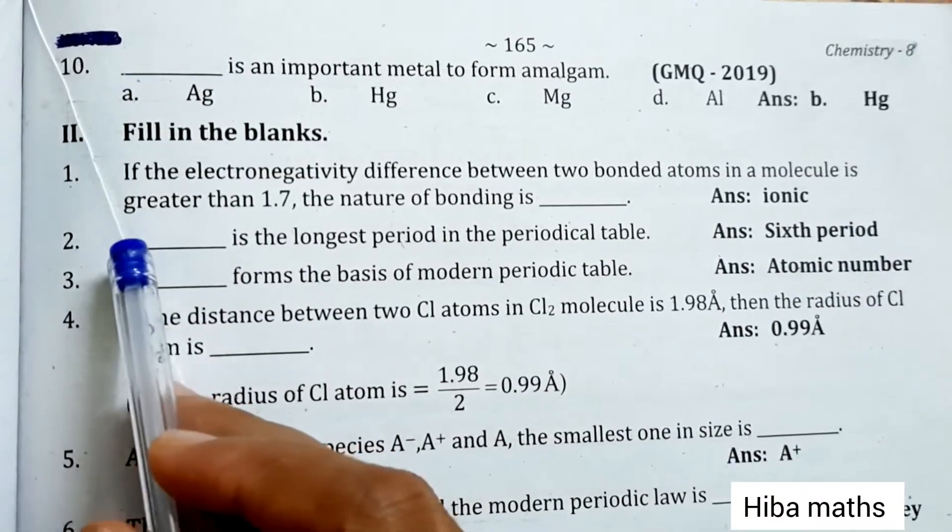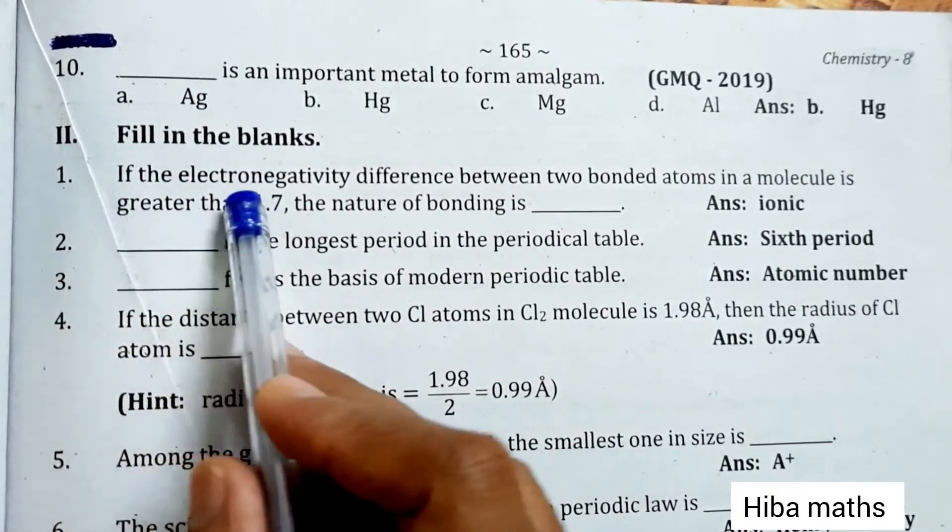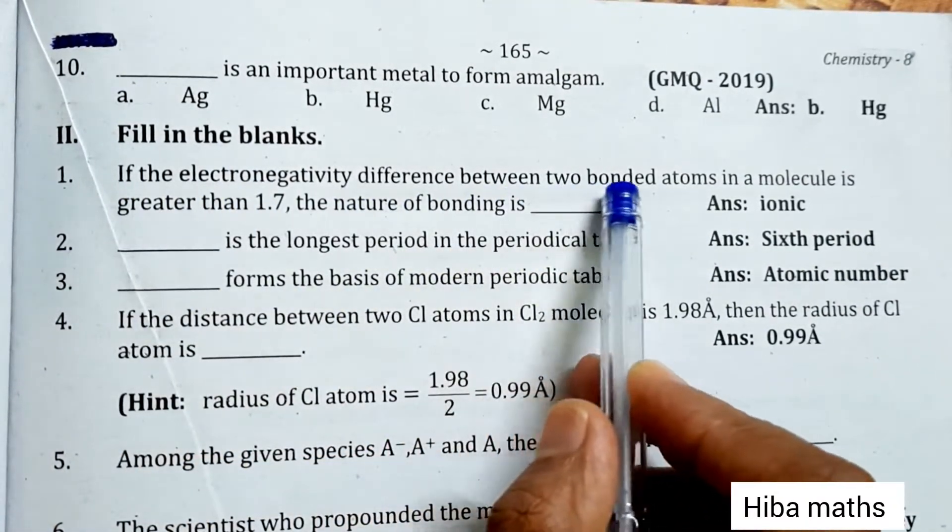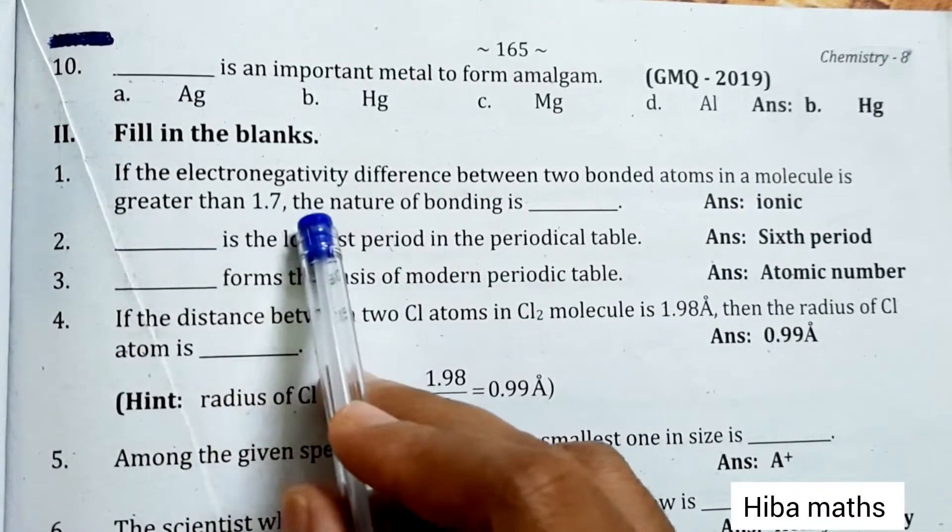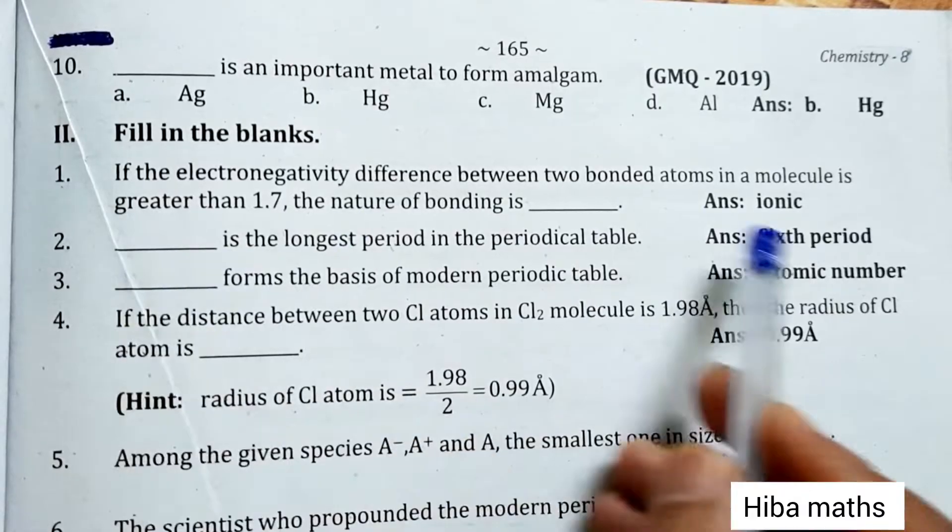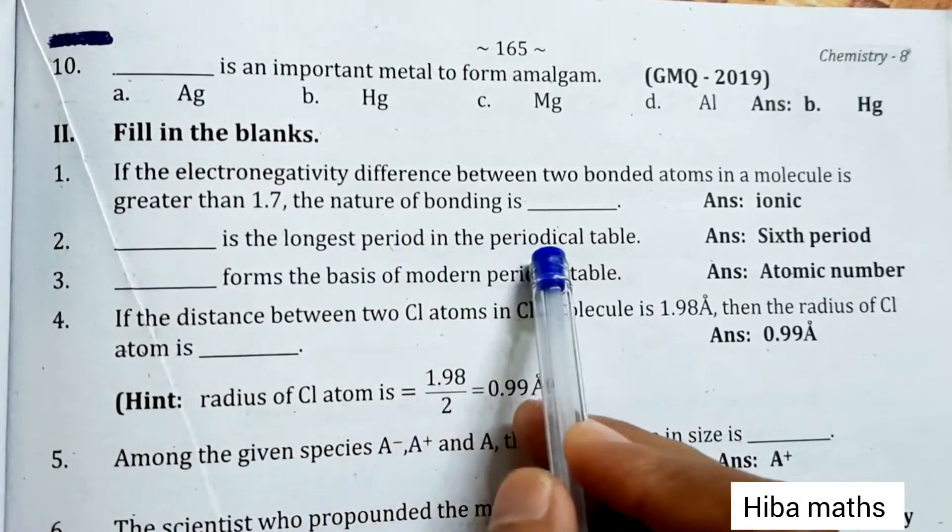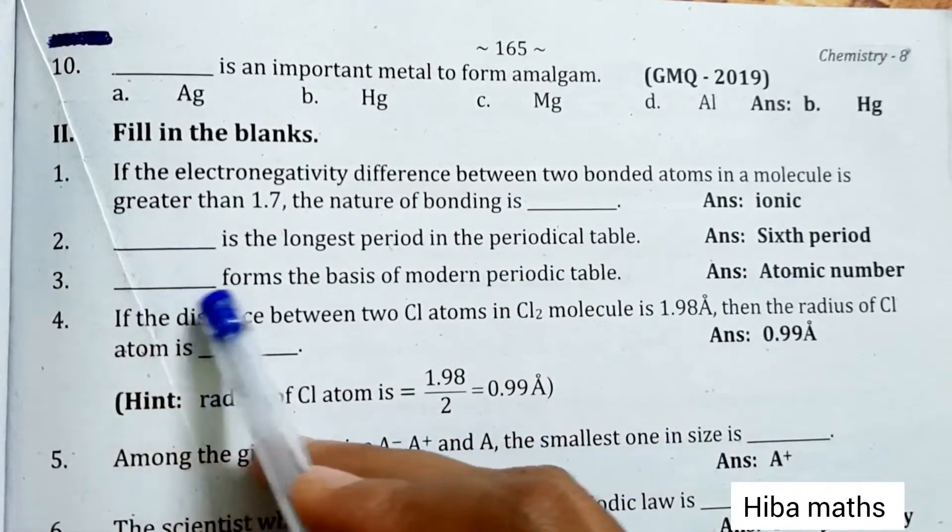Hiba Maths study time. Fill in the blanks. If the electronegativity difference between two bonded atoms in a molecule is greater than 1.7, the nature of bonding is ionic. Sixth period is the longest period in the periodic table. Atomic number forms the basis of modern periodic table.